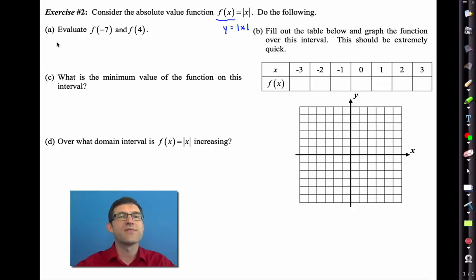All right let's go through it. Remember just function notation when it says evaluate f of negative 7. What that means is put the negative 7 in whenever there's an x. Absolute value of negative 7 is 7. Great. So f of negative 7 is 7. f of 4 is the absolute value of 4 and that's just 4. All right so easy easy easy.